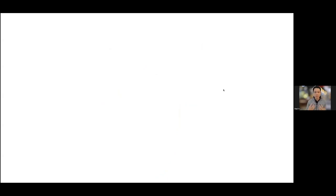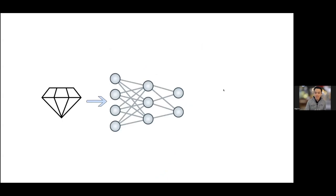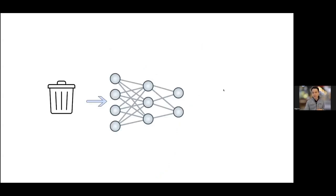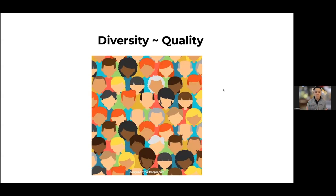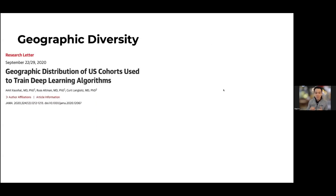A common truism in AI is 'data is the new oil' — if you have really great data, you're more likely to get a great model. But garbage in, garbage out. One common example of data quality is ground truth labels. We showed that chest X-ray tuberculosis classification models trained with radiologist-curated labels consistently outperformed those derived from natural language processing, regardless of data set size. But another form of data quality I want to highlight is diversity — not just in disease presentations, but also in demographics.